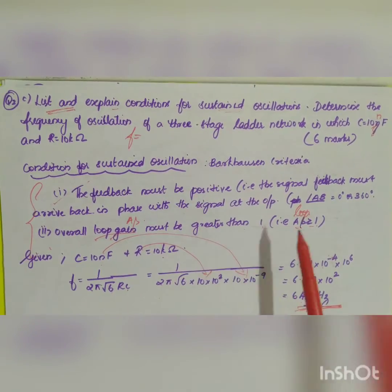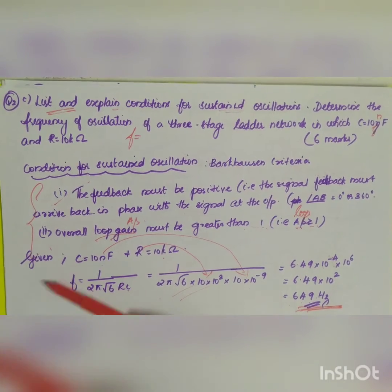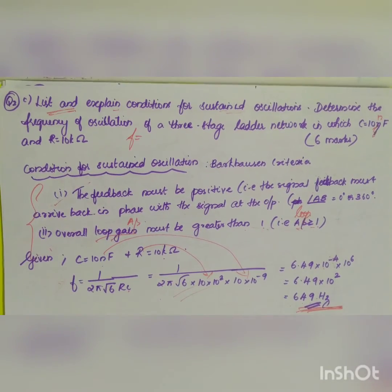These are the explanations for six marks - the conditions for oscillation and the calculation problem. You can also give the diagram for the three-stage ladder network.